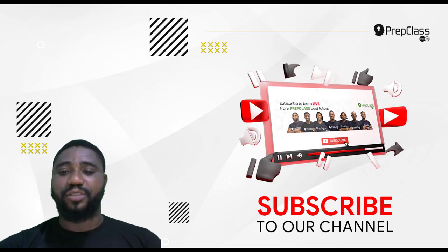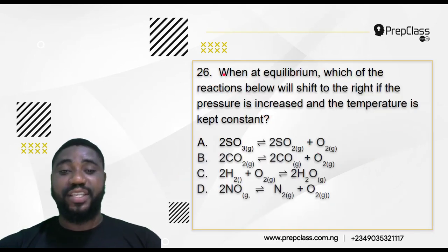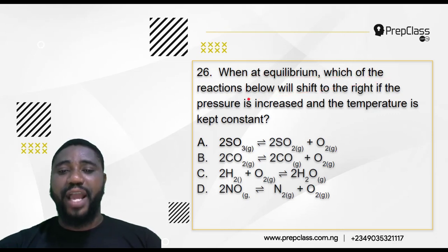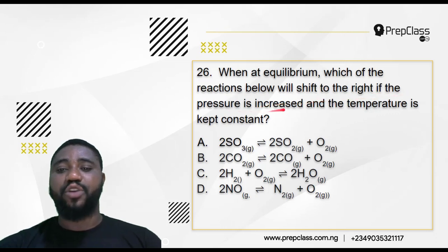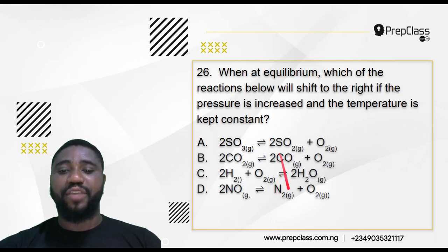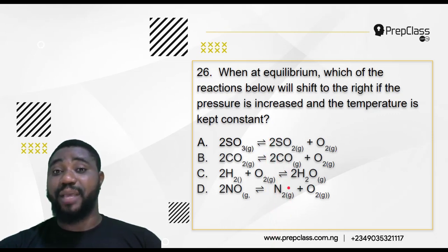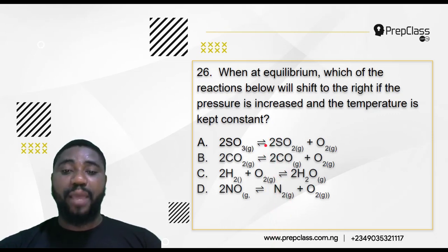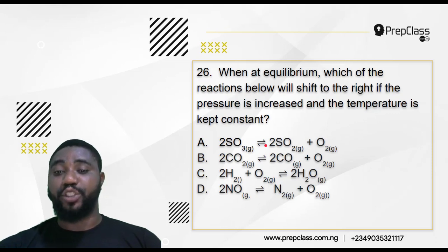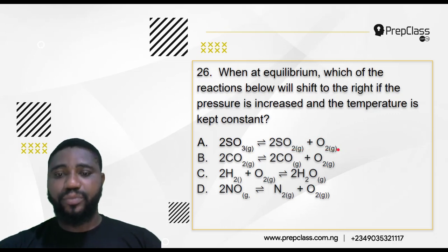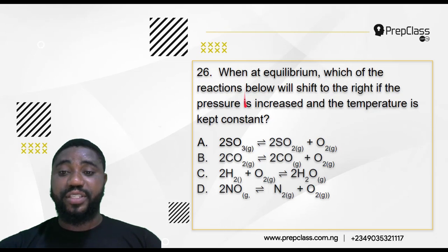Question 26 says: when at equilibrium, which of the following reactions below will shift to the right if the pressure is increased and the temperature is kept constant? Each of these equations represents chemical systems in equilibrium, so which of them will, when pressure is increased, shift the equilibrium position to the right, favoring product formation?